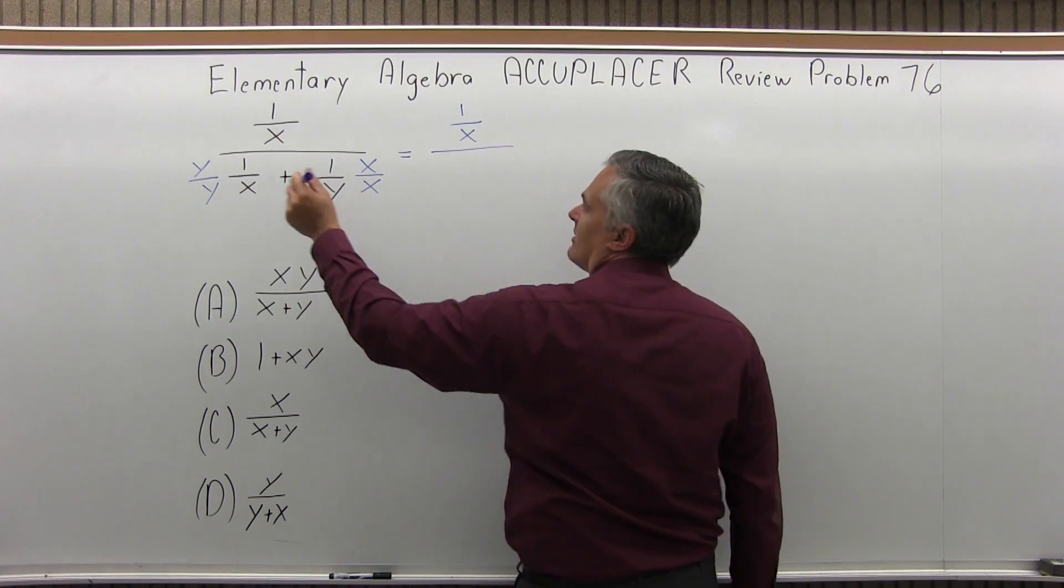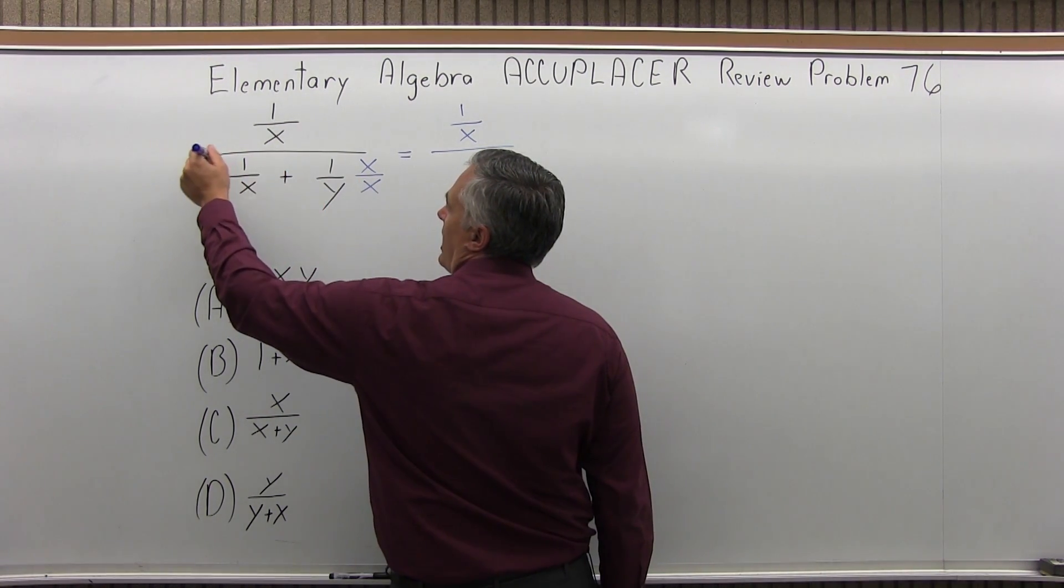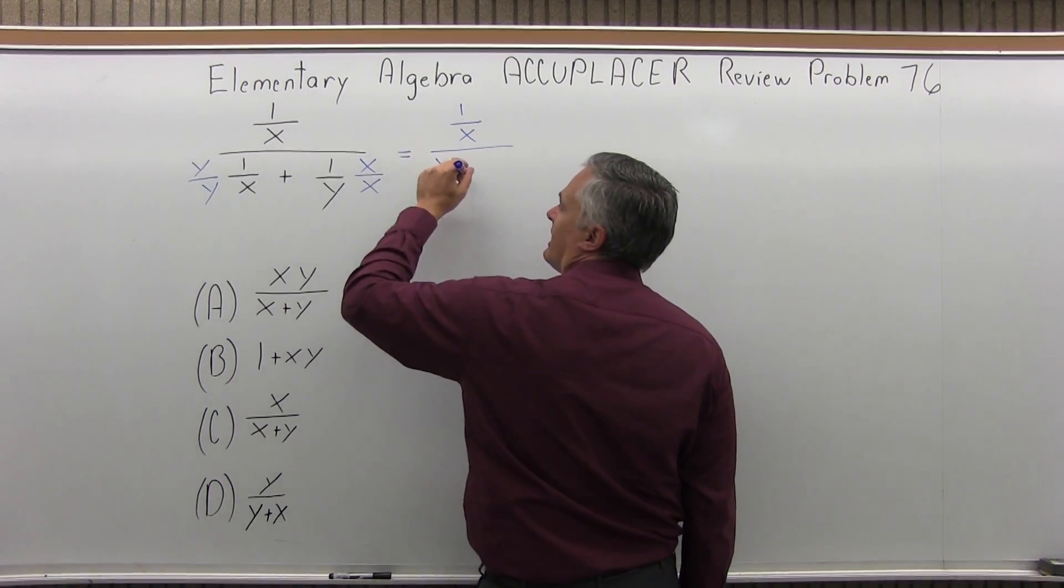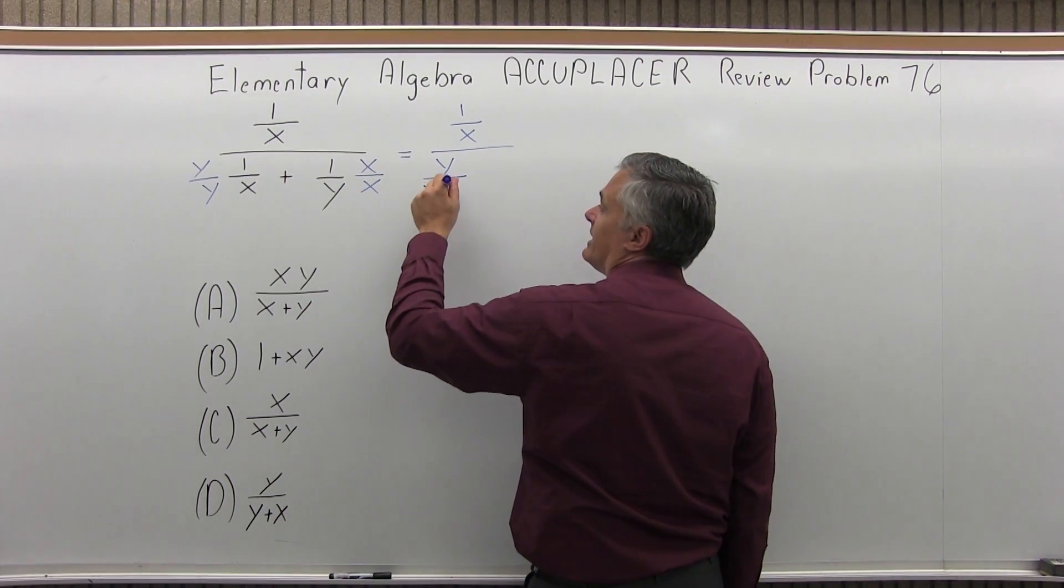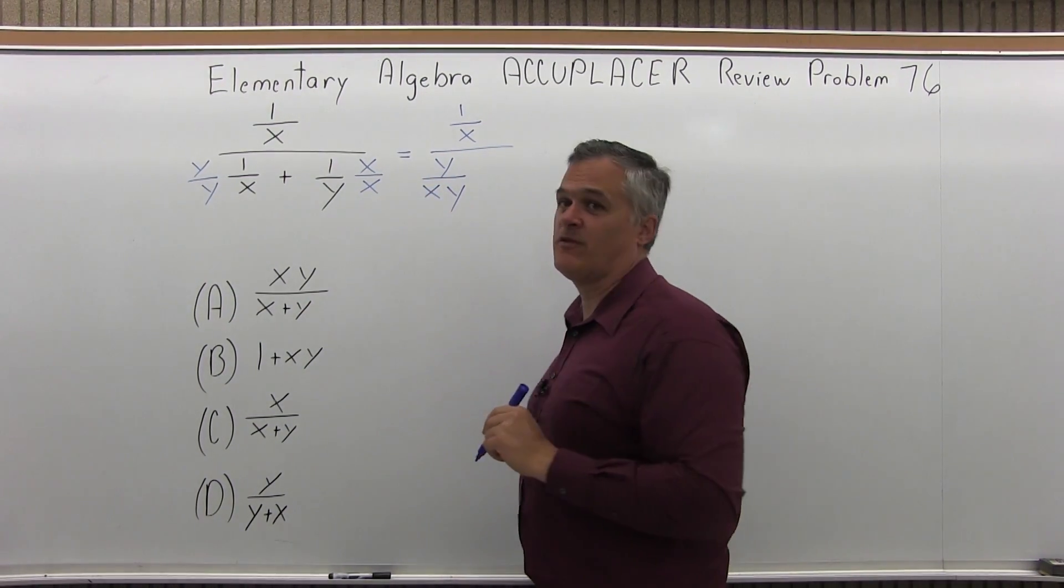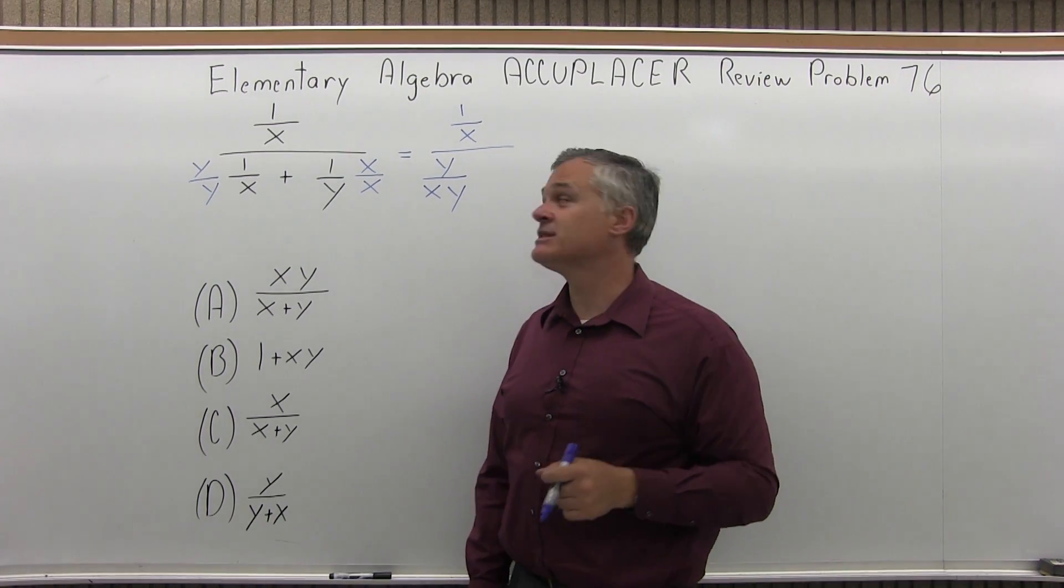But in the denominator, I'm going to have y times one is y, and then y times x, I'll write as xy. It's most traditional to put that in alphabetical order as opposed to yx. You don't have to, but I'll be traditional alphabetical order.